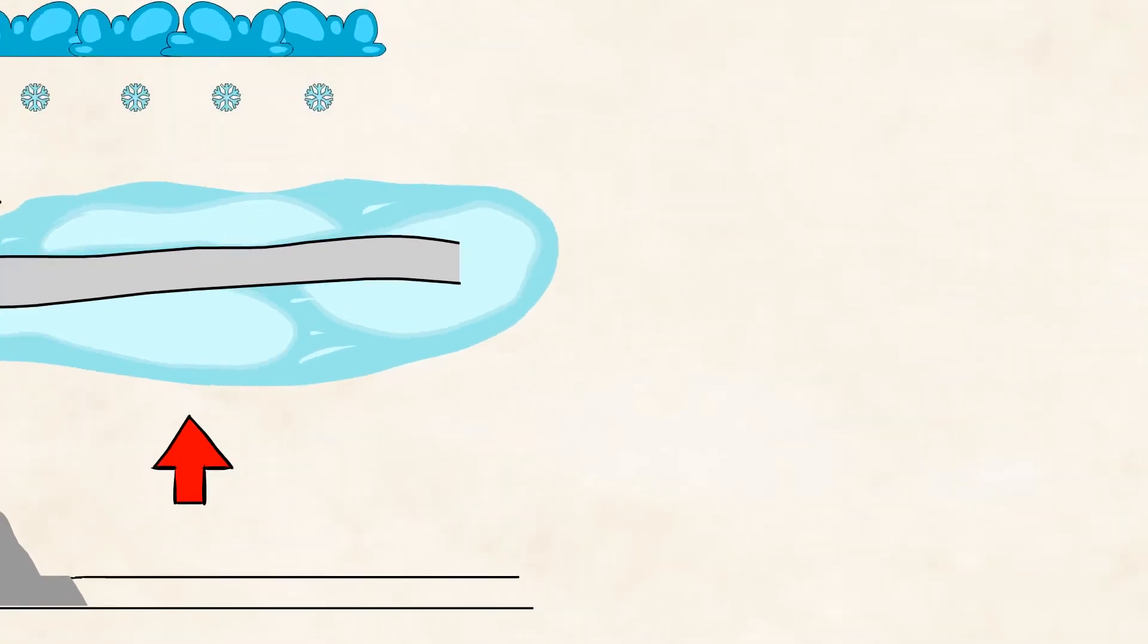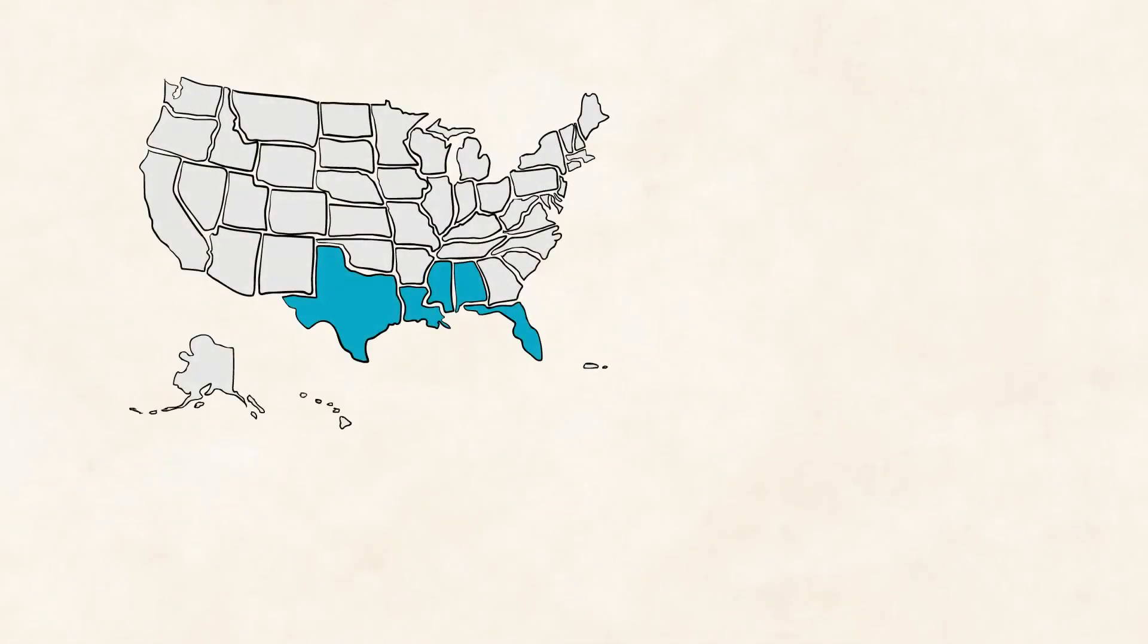That would be super helpful. And the last example for today on our extreme journey is the Gulf Coast of the United States. Here they have such an extreme amount of rainfall that they often have to worry about flooding.